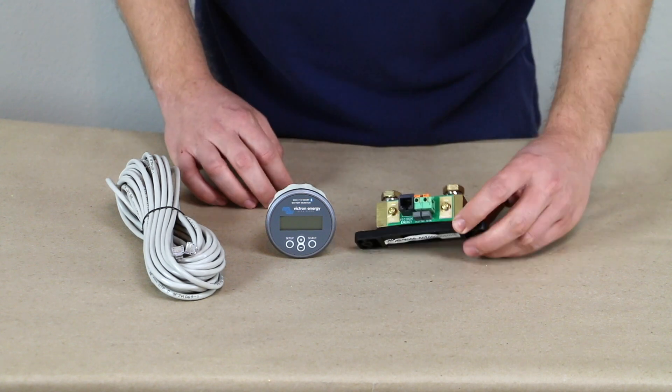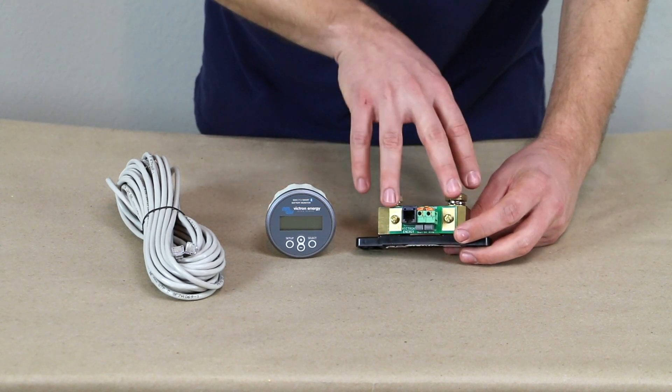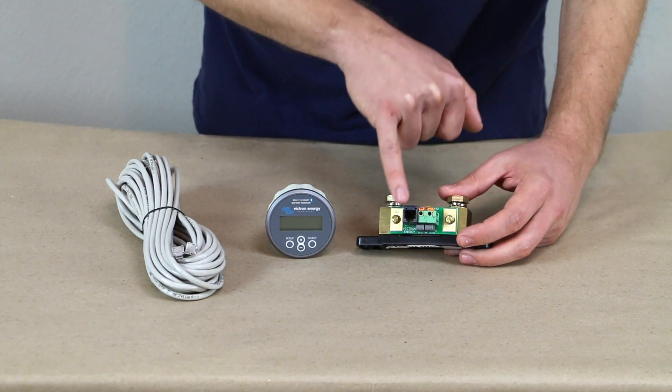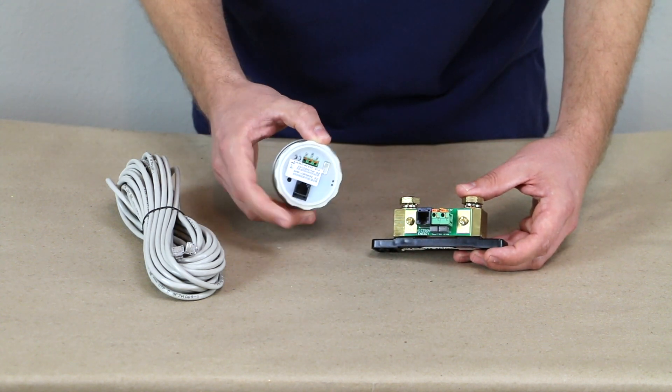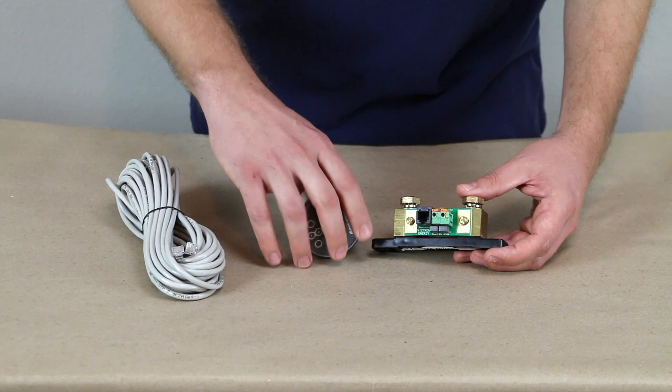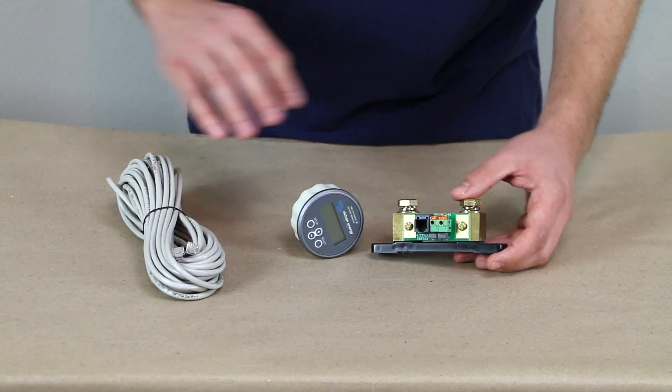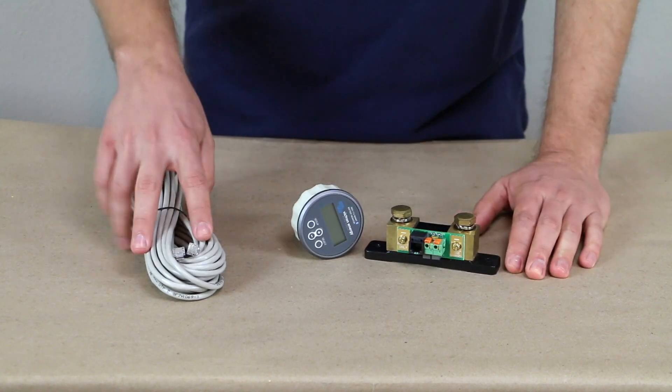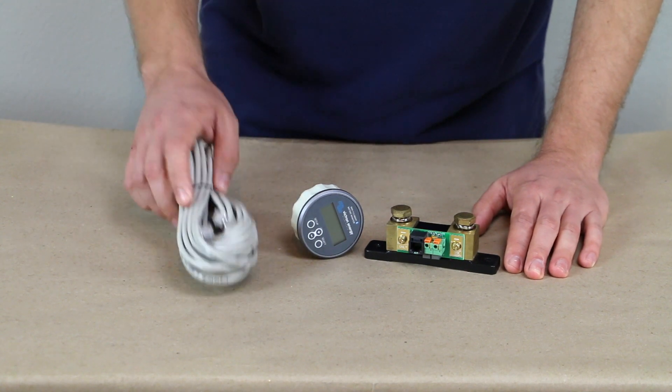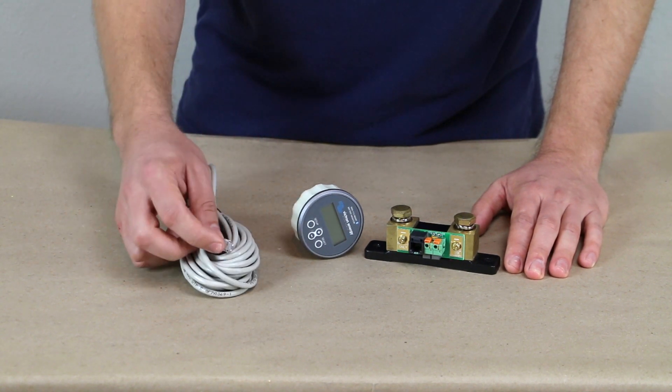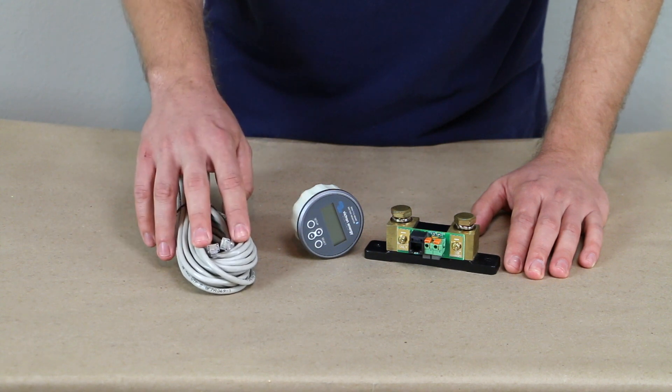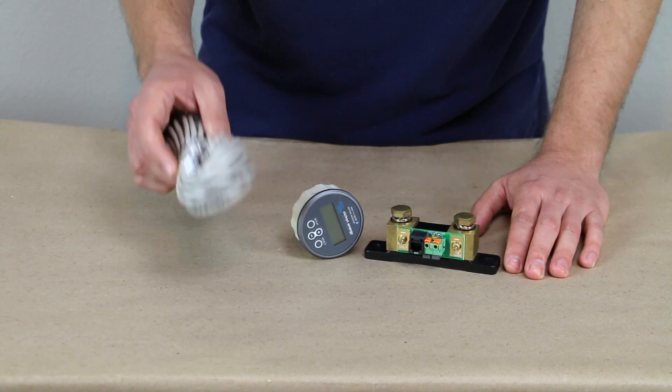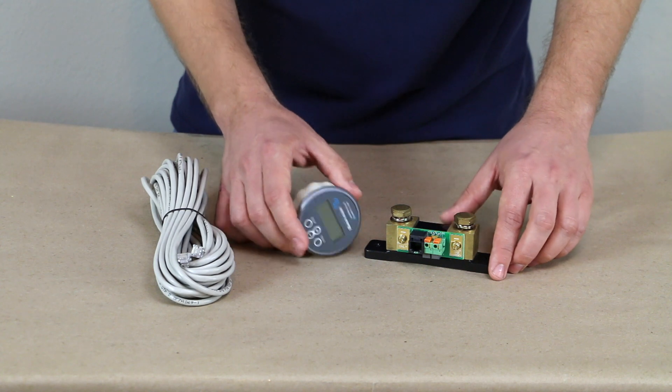So let's take a look at the BMV 712. You can see we've got the shunt. You've got a little jack here. This is an RJ12 jack that connects to the back of the screen. We've got an RJ12 cord that comes with the battery monitor. You want to watch out. This does look like a phone line, but these are six-pin connectors. A phone line would be four-pin. Make sure you get an RJ12 cord if you don't use the one out of the box.